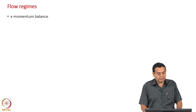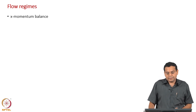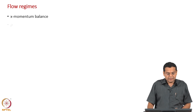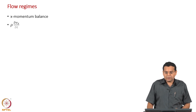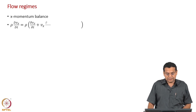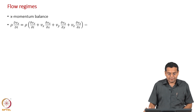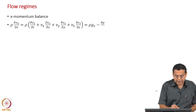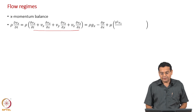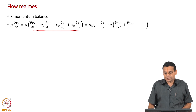To do that, we start with the x-momentum balance, or in general the Navier-Stokes equation, written for the x direction. The left-hand side is written in terms of the substantial derivative, ρ(Dv_x/Dt), expanded here. On the right-hand side we have the body force and surface forces due to pressure and viscous stresses — that is the Navier-Stokes equation in the x direction.